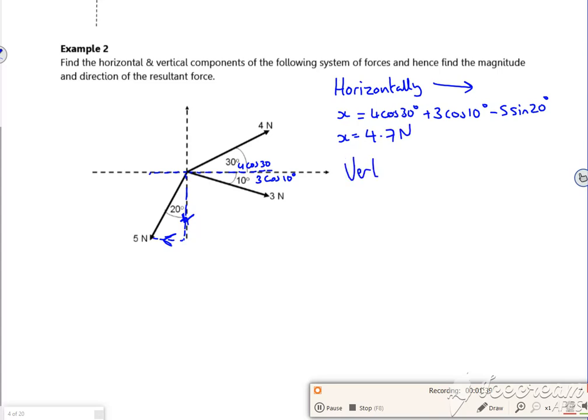So vertically, take up as being positive, I use y. So what have I got? So going up, I've got 4 sin 30, because it's opposite the angle. Then if you look, I've got one going down here for the 3 newton one. So it's going to be minus, because it's going in the opposite direction. And that'll be 3 sin 10.